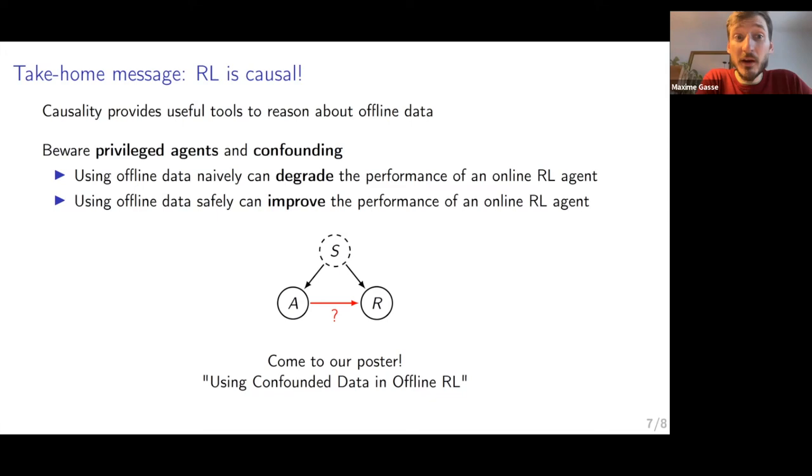As we illustrated in our experiments, if you use offline data naively, you can degrade the performance of an RL online agent. If you use this offline data in the correct way, however, you can improve the performance of an online RL agent. So it's important to pay attention to the potential confounding issues and to address it correctly. So I'll be happy to discuss. I will be at the poster. Please come to our poster and I can't wait to have a chat with you. Thank you.